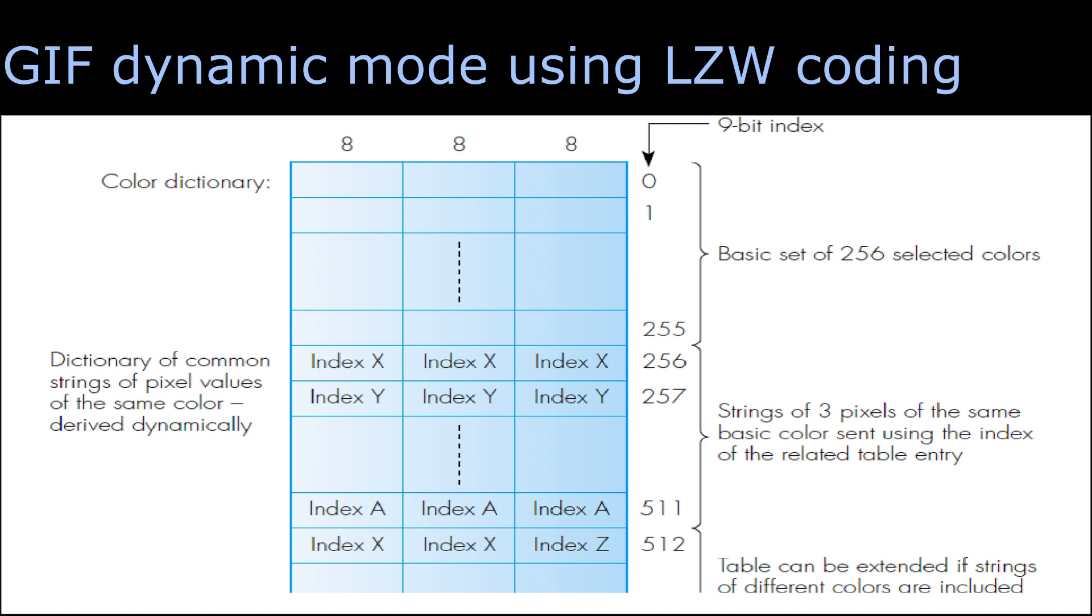When 3 continuous pixels have the same color with the index X, then in location 256 we are storing index X, index X, and index X. When 3 continuous pixels have the same color with the index X, then the index 256 will be transmitted. In this way, the image can be further compressed.